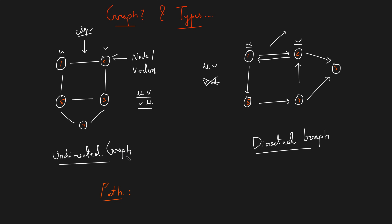Now let's talk about the term path in a graph. In an undirected graph, a path is a sequence of nodes or vertices such that none of the nodes are repeated or visited twice. For example, 1→2→3 is a valid path, and 1→2 is also a valid path, but 1→2→3→2 is not a valid path because vertex 2 appears twice. In a directed graph the same applies, but you must follow edge directions — you can go from 1 to 5 but not from 5 to 1 unless there is an edge in that direction. There can be multiple paths in a graph.